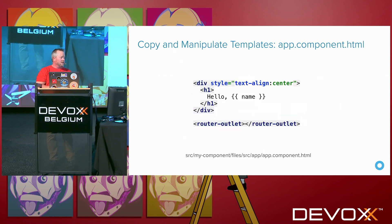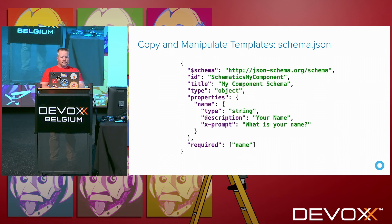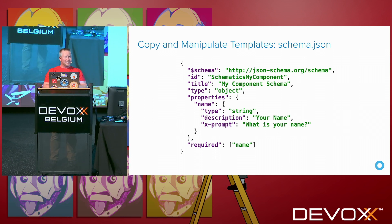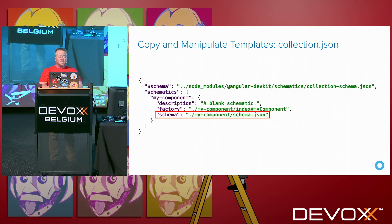For the HTML template there's nothing really special — we're just pulling in the name from that component. To define the name prompt, in the schema.json file inside the source my-component directory, you specify the different properties. In this case the name is marked as required, but you could also default it to a value so if people don't enter a name it defaults to something else. Once you've defined schema.json for your prompts, go back to collection.json and specify the schema.